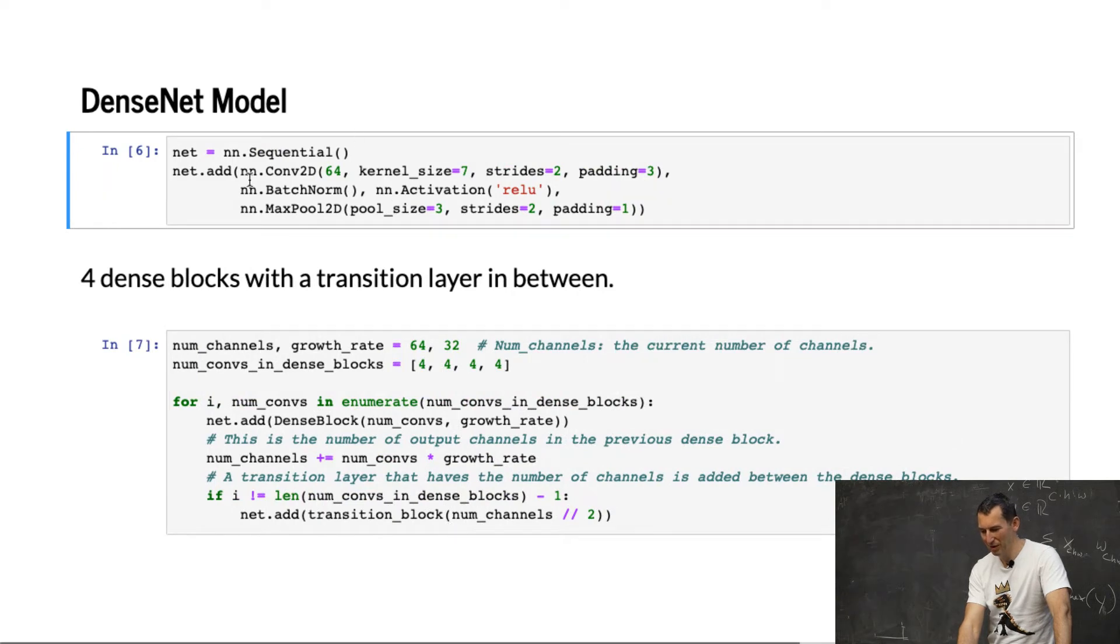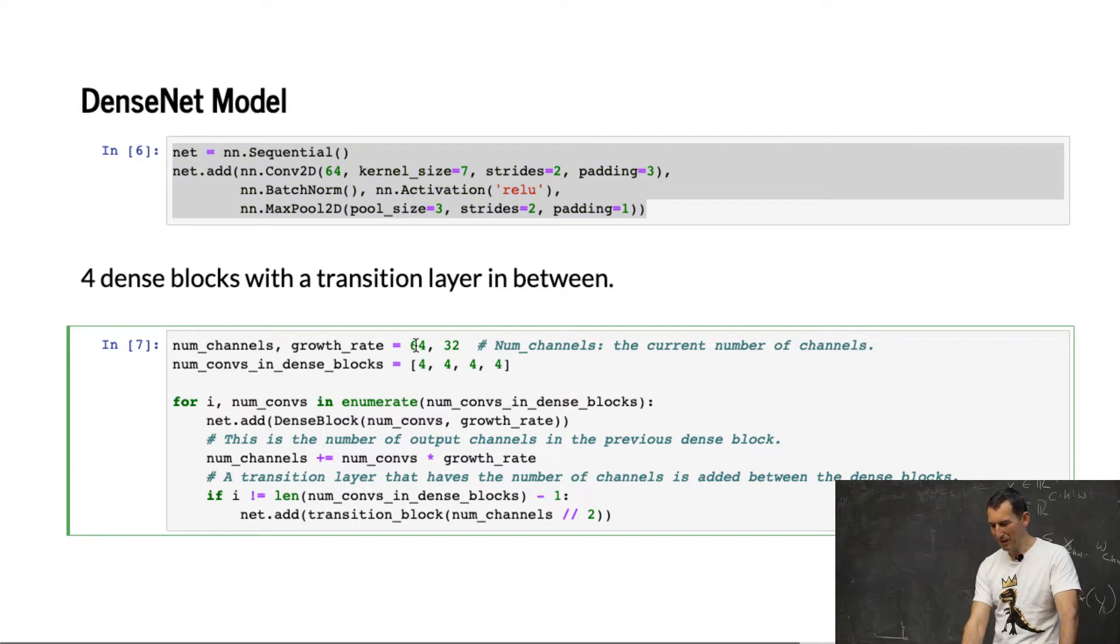And so now, here's our DenseNet model. Initially, we start off like any other good network with a few convolutions and pooling. I basically have these two: number of channels and growth rate, number of convolutions within the block. And now I just add a dense block. Then I use a transition block, and for that I need to figure out how many channels I need after that. That's basically the design of a dense net.